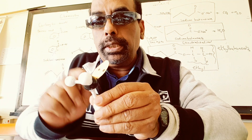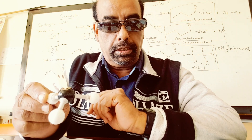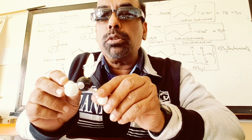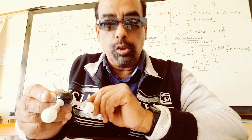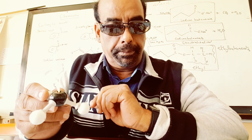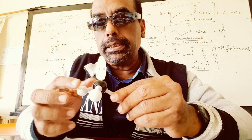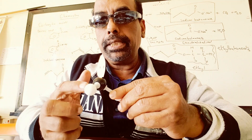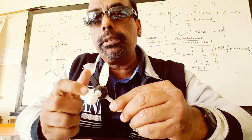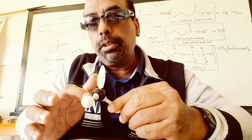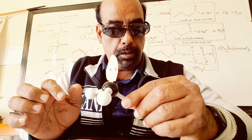The bond angle between hydrogen, nitrogen, and hydrogen is 107 degrees. There are three sigma bonds — one, two, three — three sigma covalent bonds. There is no pi bond. There is one lone pair of electrons and six bonded electrons, which is three pairs of bonded electrons. There is bonded pair–bonded pair repulsion and lone pair–bonded pair repulsion. There is no lone pair–lone pair repulsion because there is only one lone pair of electrons.